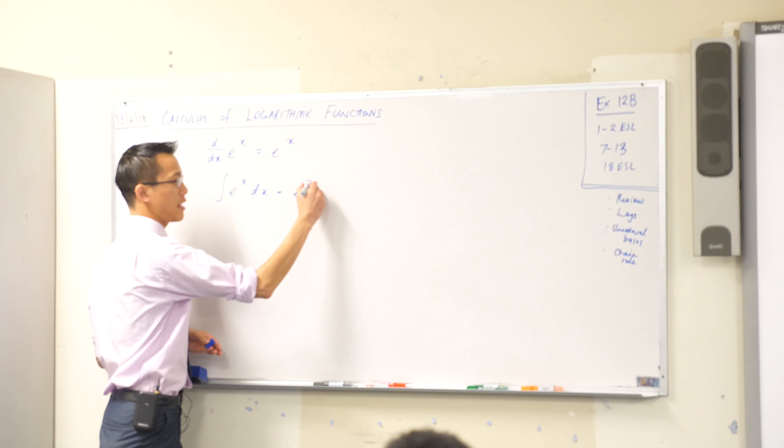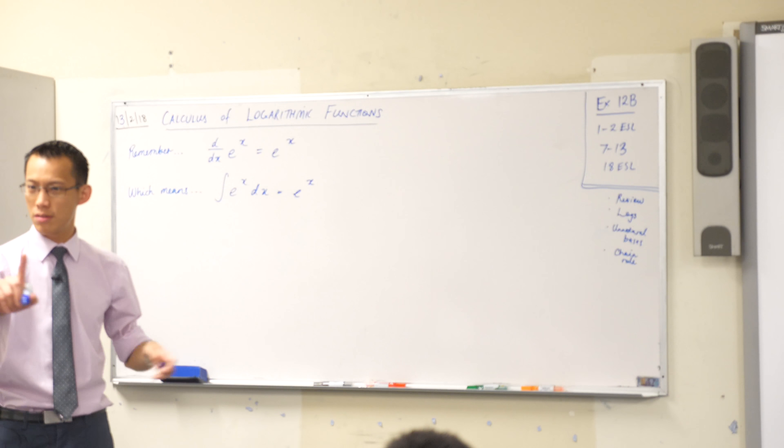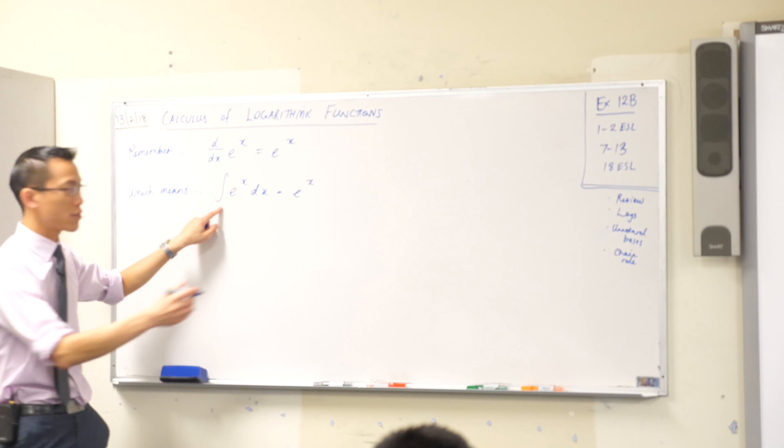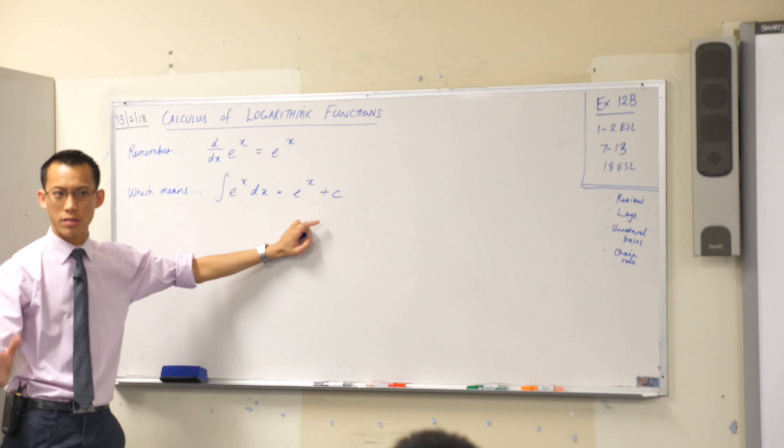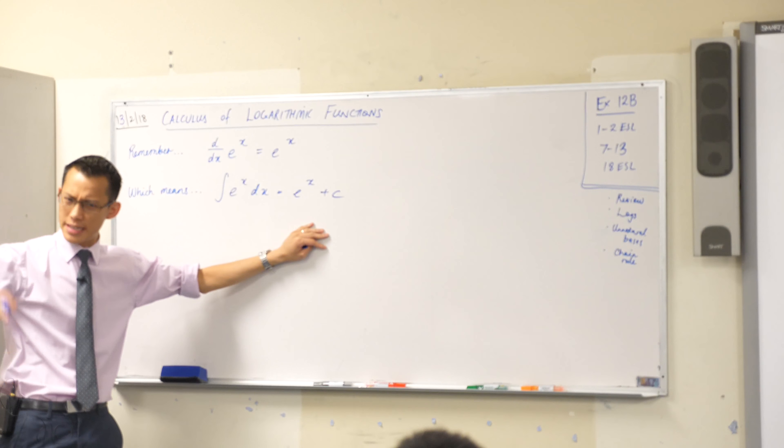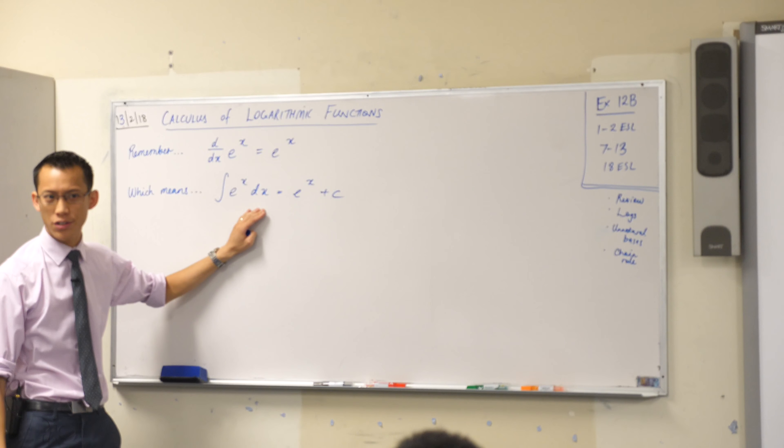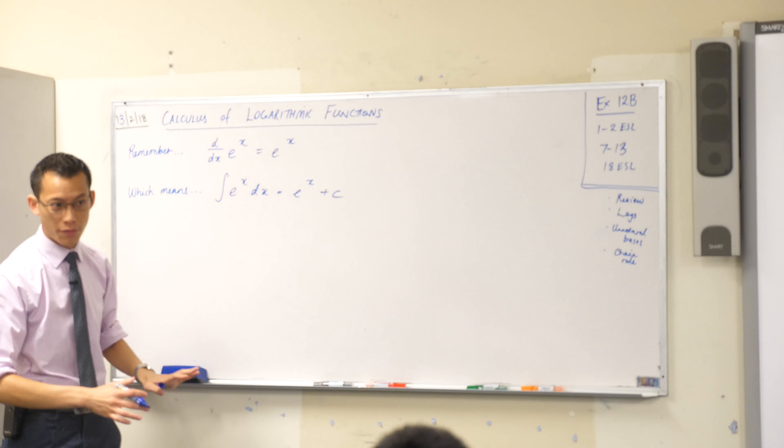This should be just e to the x with one subtle difference of course. This is an indefinite integral. So it could have come from any of these guys where c is any kind of constant that we like. You're just moving the graph up and down; the gradient function will not be changed. So this is all fine.